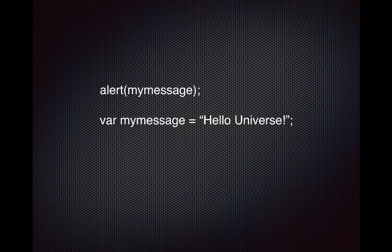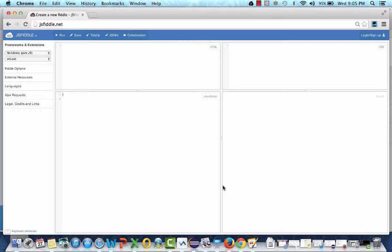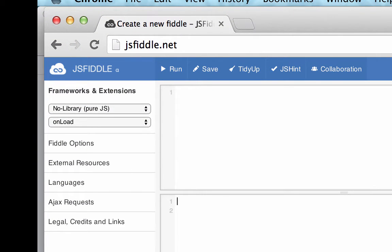Now if you reverse this code — if you try to alert the message first and then assign it a value — it would get confused, because on the first line it doesn't yet know what the value of myMessage is. At that point myMessage is not even defined, so it would give an error. That's how JavaScript runs: line by line.